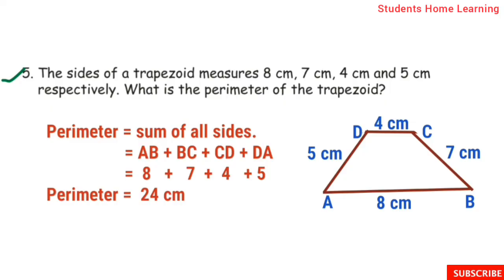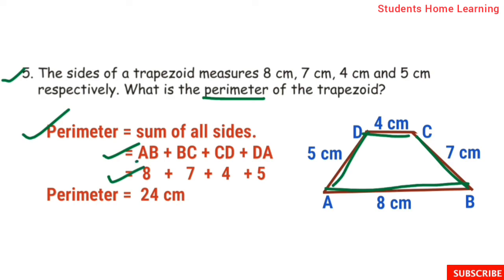Fifth sum: the sides of a trapezoid measure 8 cm, 7 cm, 4 cm, and 5 cm respectively. What is the perimeter of the trapezoid? Perimeter is equal to sum of all sides: AB plus BC plus CD plus DA equals 8 plus 7 plus 4 plus 5. Adding gives 24 cm. Perimeter is equal to 24 cm.